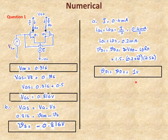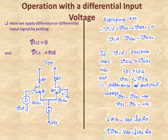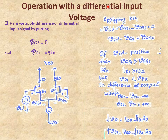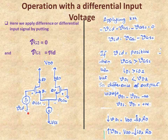Part A is complete. Part B procedure is done for VCM = 0. The remaining two VCM values should be solved independently. So far we have applied only DC signal. Our next topic is the operation with a differential input voltage applied on the gates — gate 2 is grounded and gate 1 has AC signal VID applied.